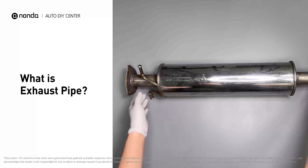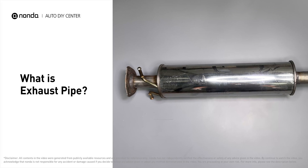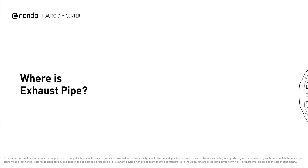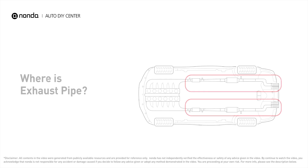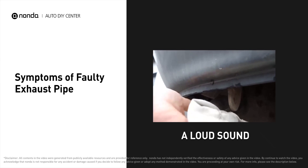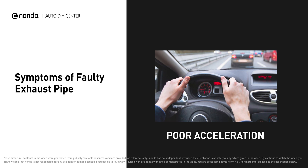The entire exhaust system conveys burnt gases from the engine and includes one or more exhaust pipes. It is comprised of many pipes and pieces that work together to allow exhaust gases to escape the engine, running along the undercarriage and ending with a visible tailpipe. A faulty exhaust pipe causes a loud sound when you rev up the engine, generates a strong smell in the exhaust emissions, and you may experience poor acceleration while driving.